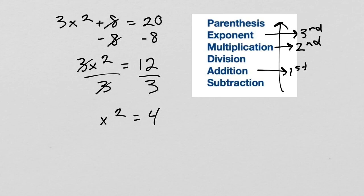We finally have to get rid of the exponent 2. We do the opposite operation. The opposite operation of exponent 2 is square root. We find the square root of both sides. This will cancel out. The square root of 4 is 2. Therefore, x equals 2.